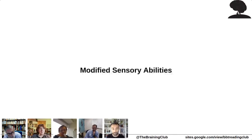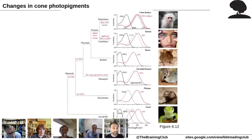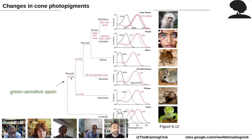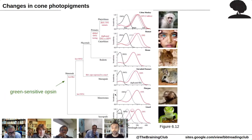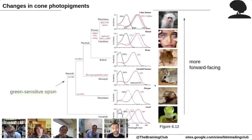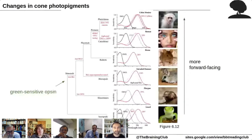Mammals actually lost some sensory abilities, especially in the visual system. As they became nocturnal, they lost the green-sensitive opsin RH2. Then when they became diurnal again, they had to reinvent color vision from what was left. Another important feature is that the eyes became more forward-facing, which may help detecting light in low-light environments at night, and also enables stereoscopic vision — especially for predators hunting prey.